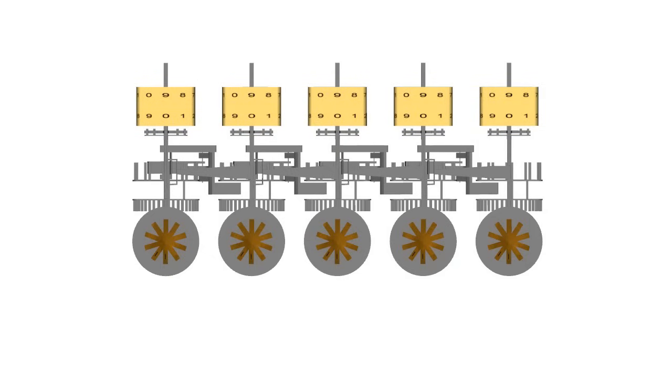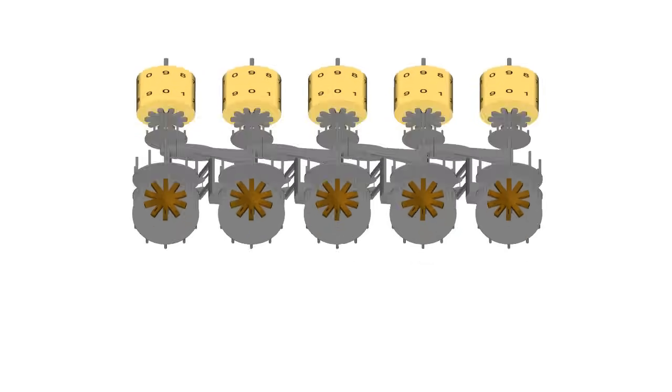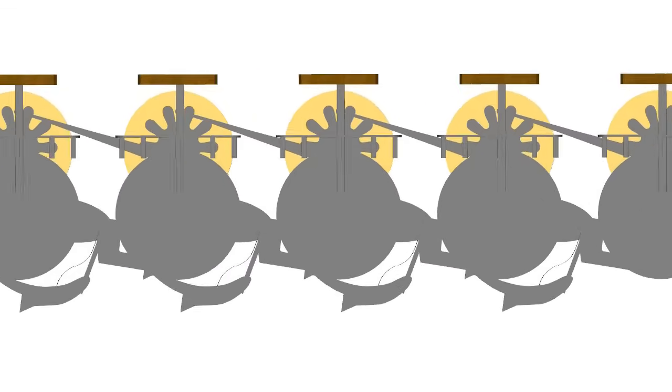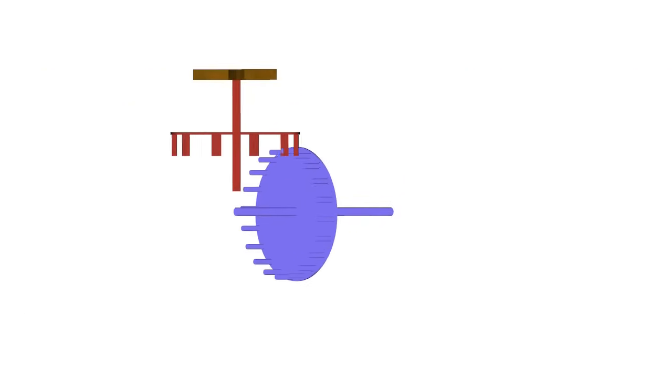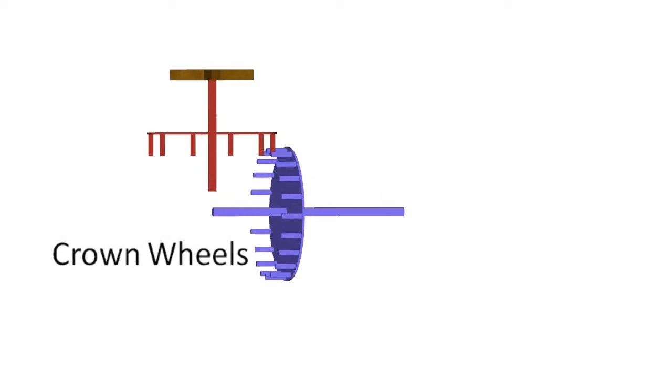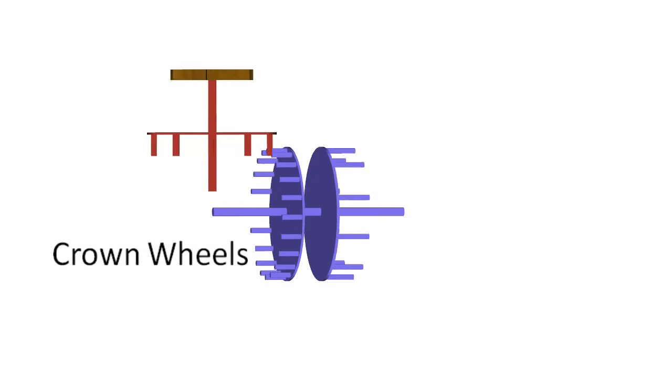Looking inside the Pascaline, we see five sets of nearly identical mechanisms. A pair of crown wheels transfers the rotation of the input dial to an accumulator wheel.